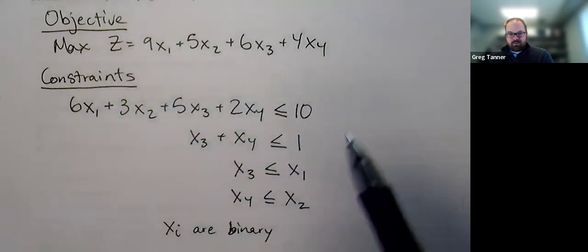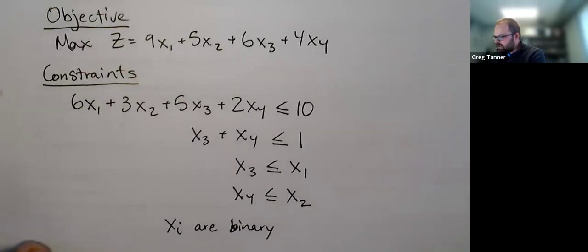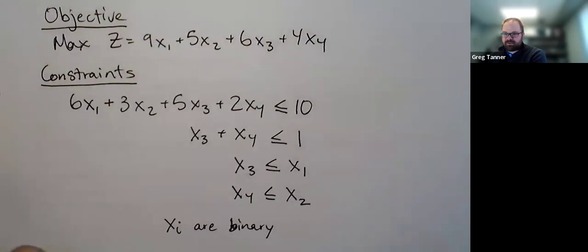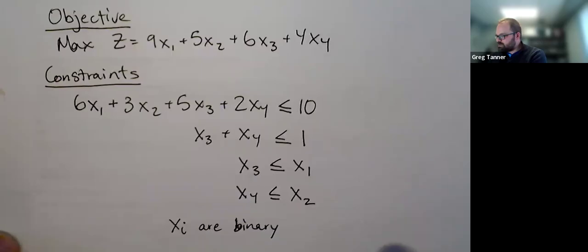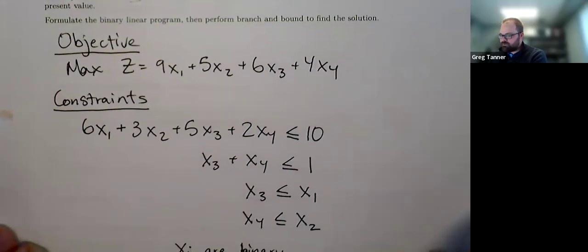When we relax this problem, we're going to relax the binary condition. And so we're going to let each of the x's be continuous variables. We'll have to give them a lower and upper bound of between zero and one so that they stay in the range that we'd expect for binary variables. Okay. So I'll actually use the code in my notes in the printout rather than switching back and forth to the computer. But we'll also take a look at the node diagram as well. So we'll switch back and forth with that.